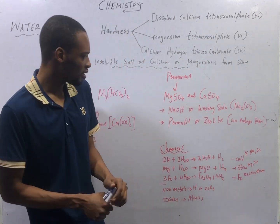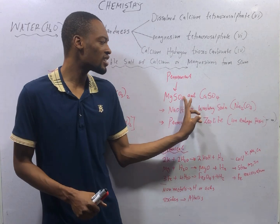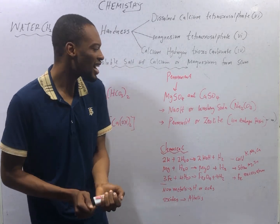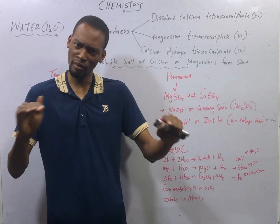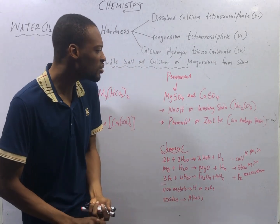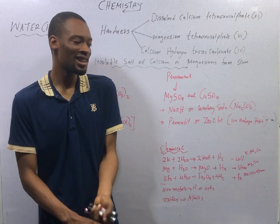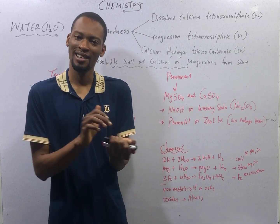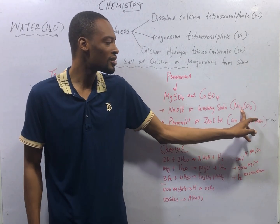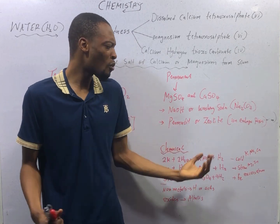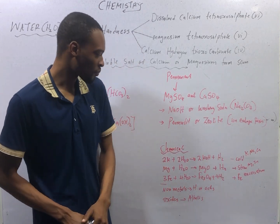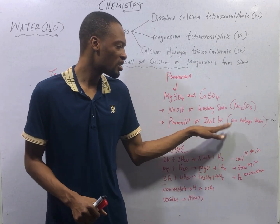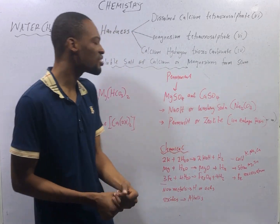For permanent hardness, it is caused by the presence of MgSO₄ and CaSO₄. Permanent hardness cannot be removed by boiling. To remove permanent hardness, we either use sodium hydroxide or washing soda — Na₂CO₃·10H₂O. Note: soda ash does not contain water of crystallization, while washing soda does. Permanent hardness can also be removed by adding permutite or zeolite — these are ion exchange resins.